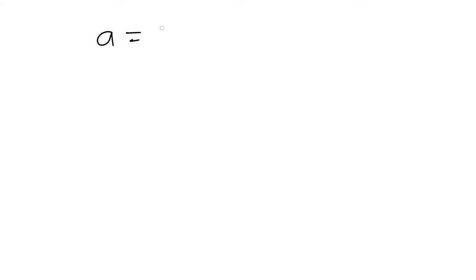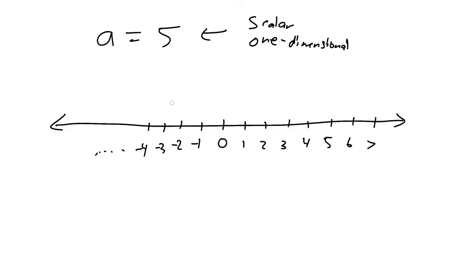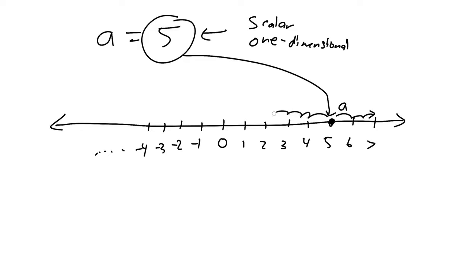If you look at this in terms of notation, we might say we have the letter A and that equals five — that's how we represent a scalar quantity, a one-dimensional quantity. The way you might visualize this is with the number line, which is the quintessential one-dimensional representation. We have positives going in one direction and negatives going in another. When we say A equals five, we can visualize that as A sitting right there on the number line. You can imagine adding numbers and going right, or subtracting and going left.